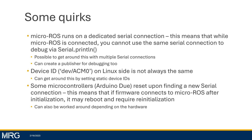It's possible to get around this using multiple serial connections — you could have one dedicated to your Serial.println and then another dedicated to your Micro-ROS connection. You can also create a publisher for debugging, but that might be problematic if your Micro-ROS itself is what you're trying to debug and you can't get it to publish or subscribe.